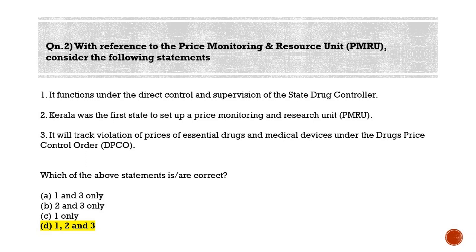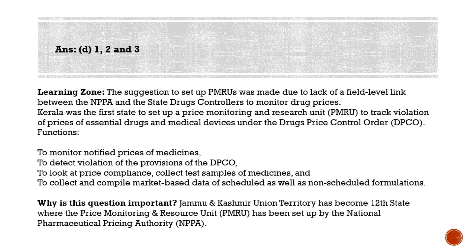The correct answer is option D — 1, 2 and 3. All the above statements are correct. Pharma companies have been accused of overcharging for drugs in scheduled categories fixed by DPCO and those outside its ambit too. For controlling drug prices, we have the National Pharmaceutical Pricing Authority (NPPA), a government regulatory agency. The Price Monitoring and Resource Unit (PMRU) is another body constituted apart from NPPA.